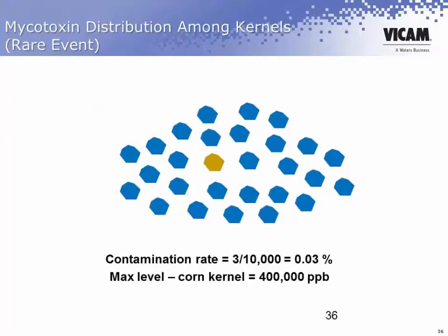So why is so much of the variability due to sampling? This has to do with the mycotoxin distribution. The mycotoxins are produced by fungi, and those fungi are not uniformly distributed among kernels. In fact, the contamination rate in cases where people have looked at individual kernels has been approximately 3 per 10,000 kernels, or 0.03 percent.